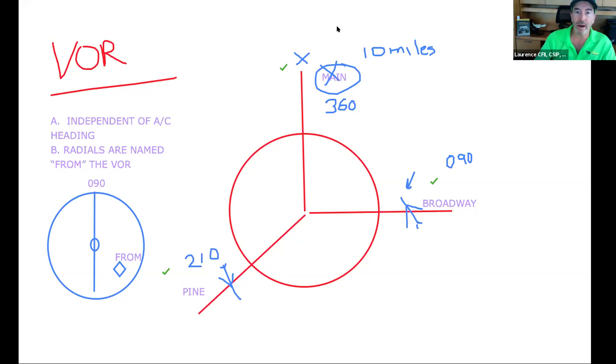So now just to throw you for a little bit of a loop. Let's change the dial, the OBS dial, not the aircraft position. We're going to dial it in to see the TO flag. What would be, and we're talking about this airplane up here. What would we put in to dial in to get that setting? 180. Exactly.